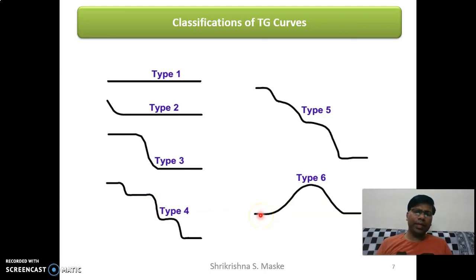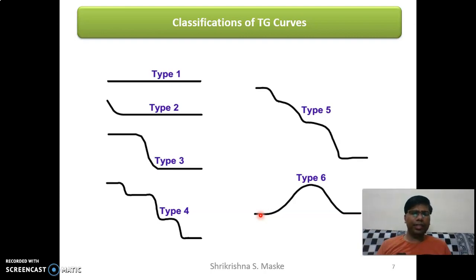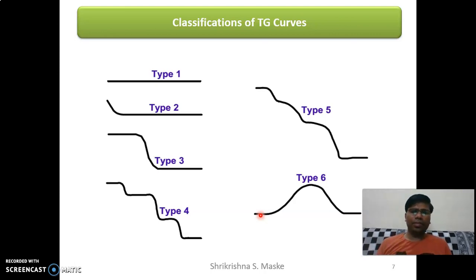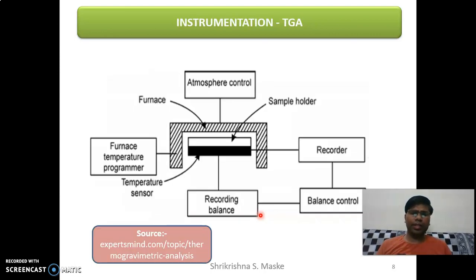The last type is type six. In case of type six peaks, there has been a rise in mass. This rise in mass is because of a chemical reaction where some gases react with the molecule and form a molecule of higher molecular weight, giving an idea about addition of mass into the sample. These are the classifications of thermogravimetric curves.